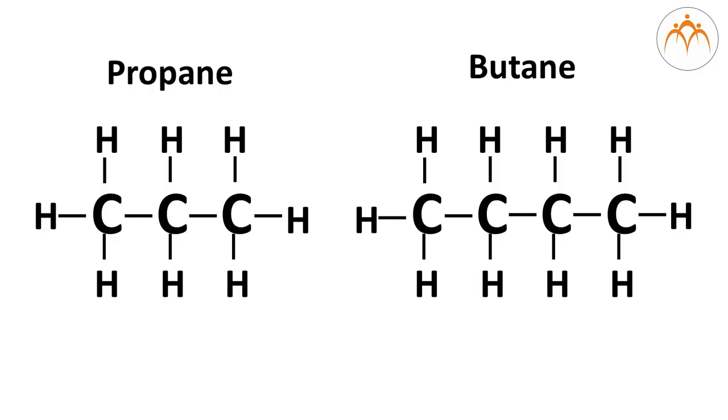You can try drawing line structure for propane and butane. If you see this type of molecules of ethane, propane or butane, it seems that valences of all atoms are satisfied with just single bonds. And such compounds are called saturated compounds.